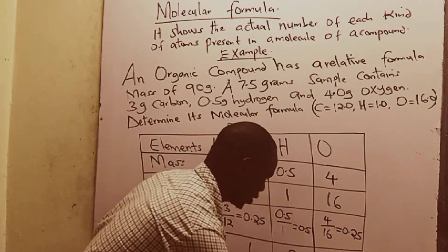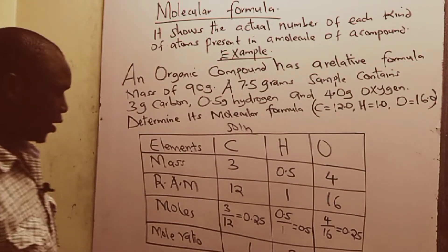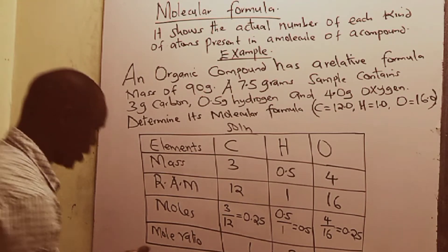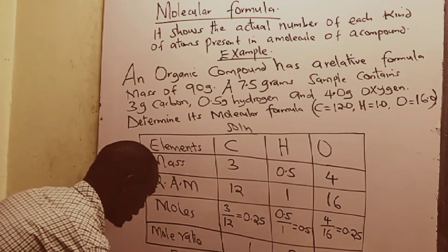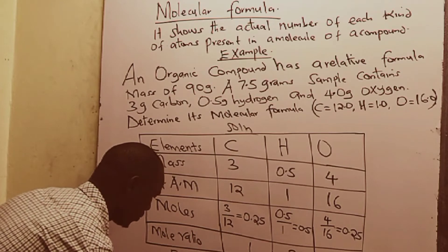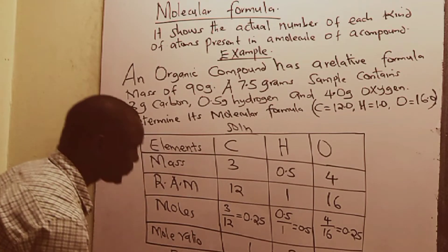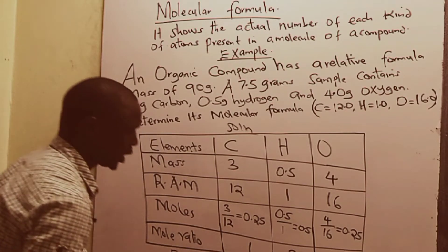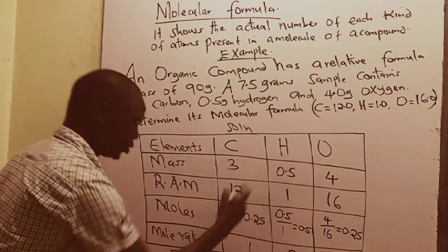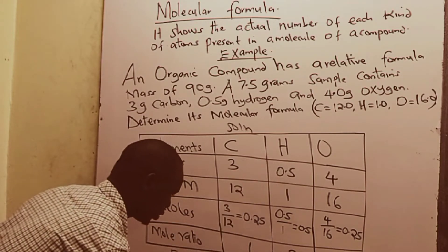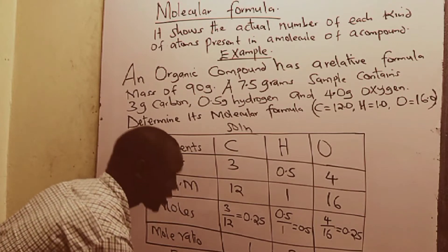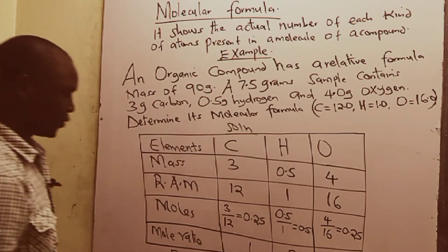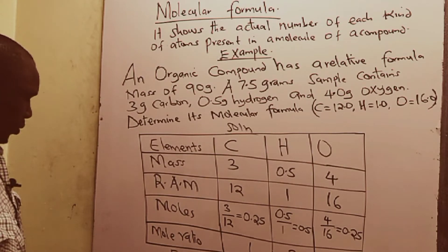And therefore, from there we can write the empirical formula. The empirical formula is: carbon — we only have 1 atom of carbon, 2 atoms of hydrogen, and 1 atom of oxygen. That gives us what we call the empirical formula: CH₂O.